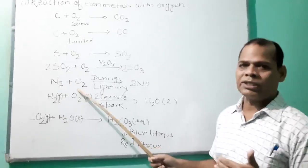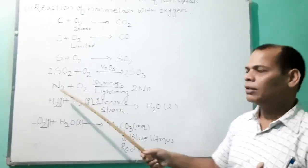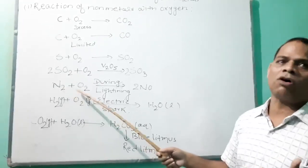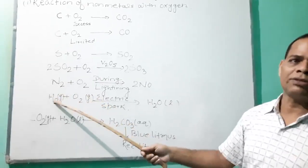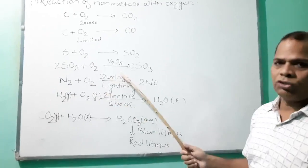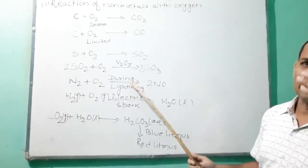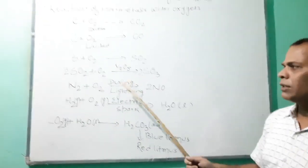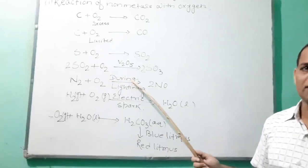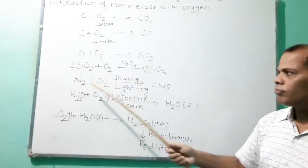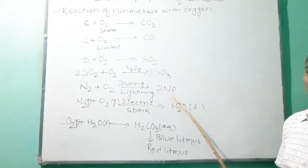As you studied in class 9 in the fixation of nitrogen: nitrogen reacts with oxygen during lightning, or in the lab it requires 3000 Kelvin temperature, and then it forms nitric oxide.